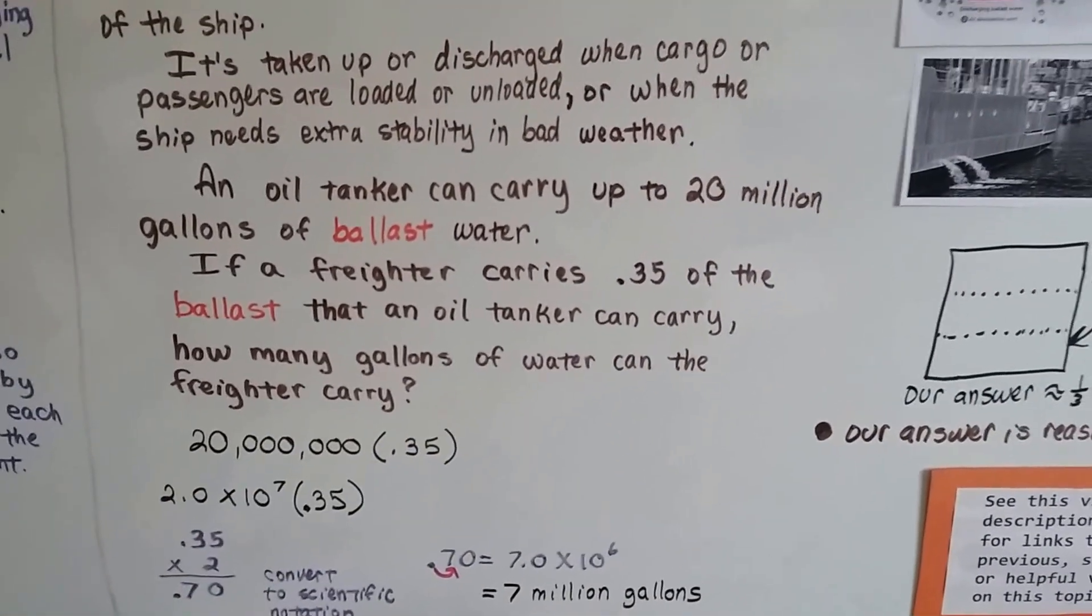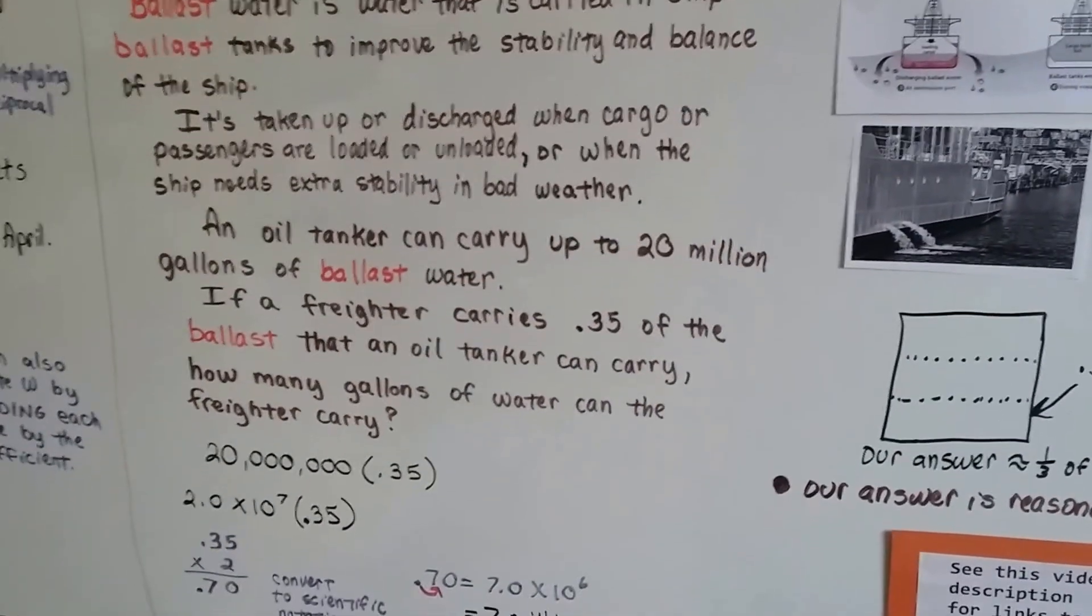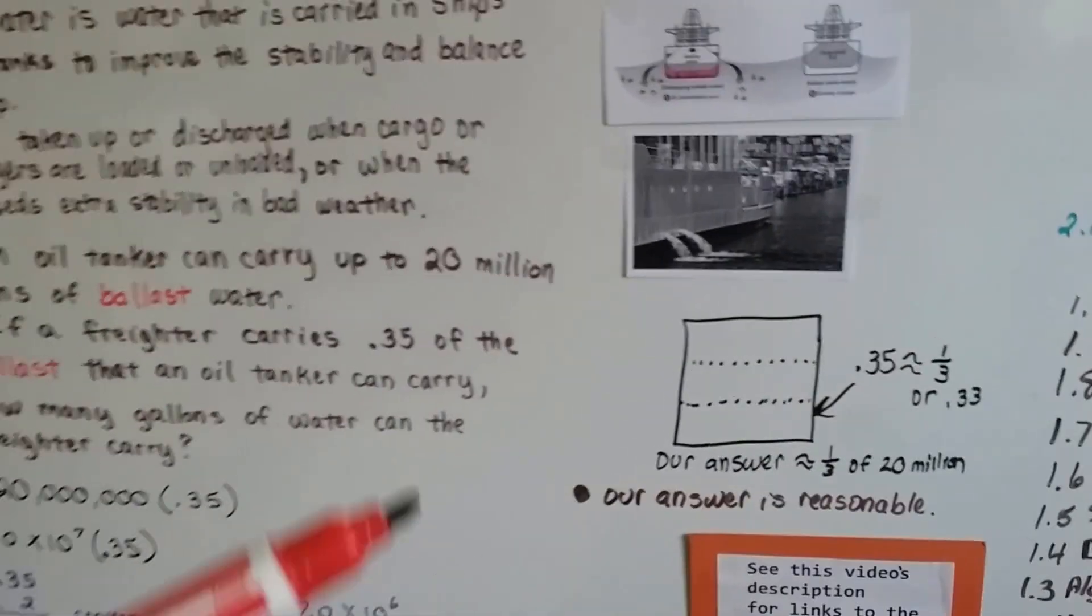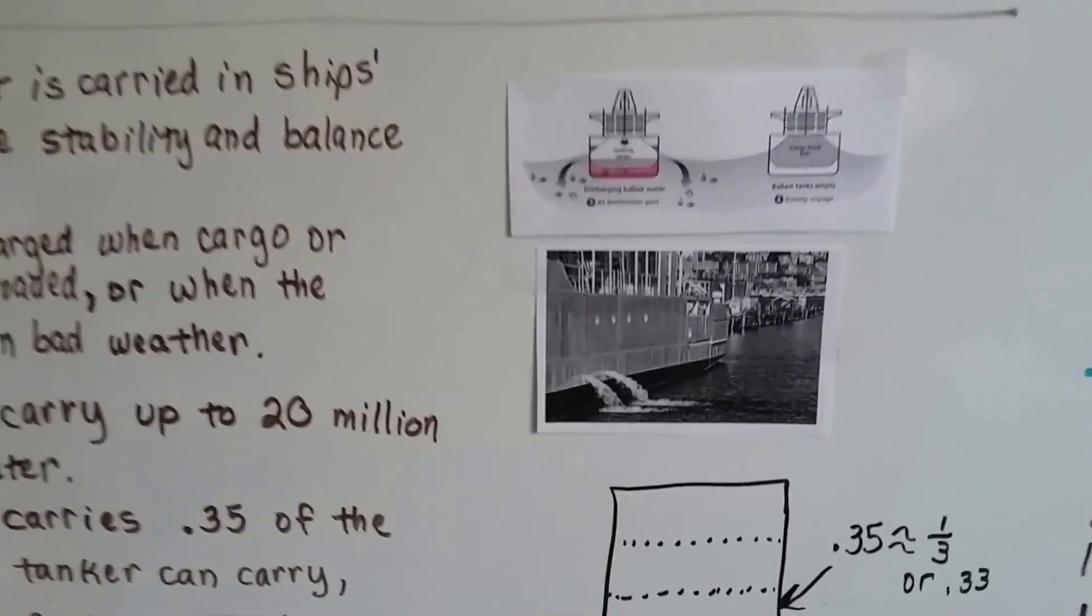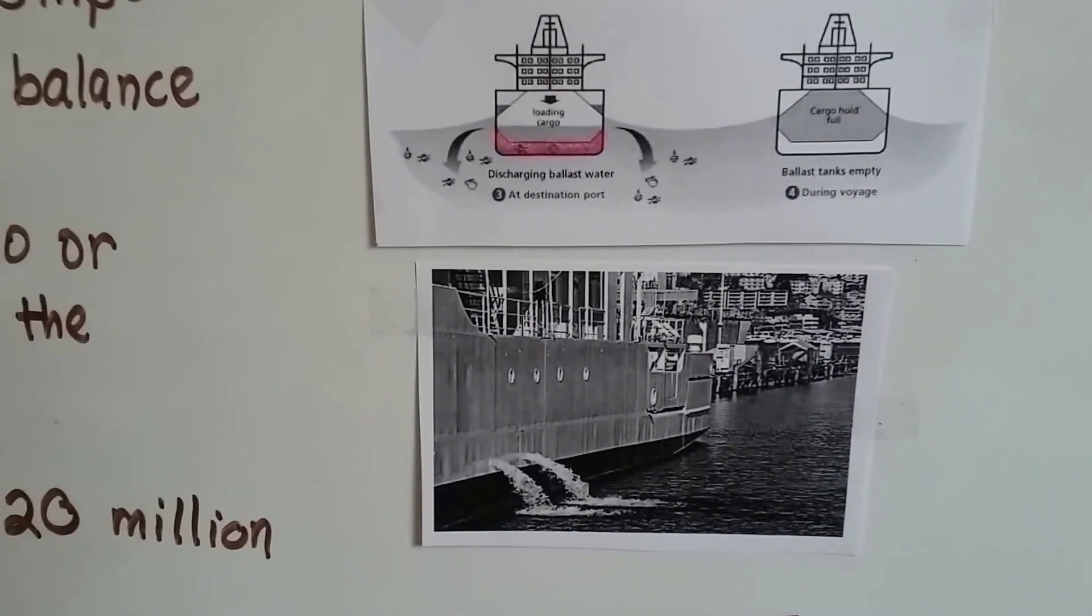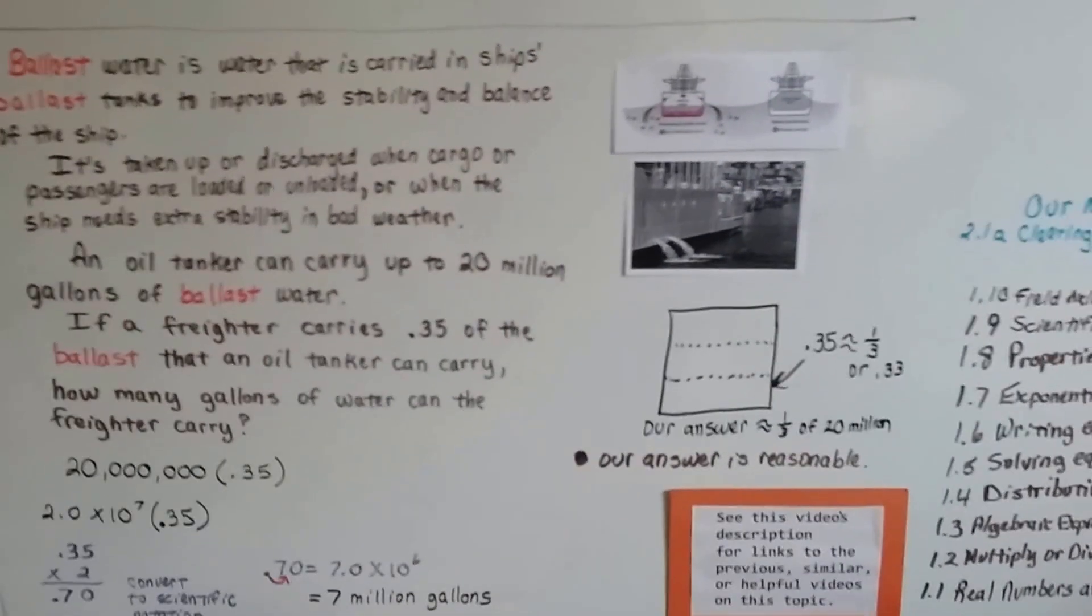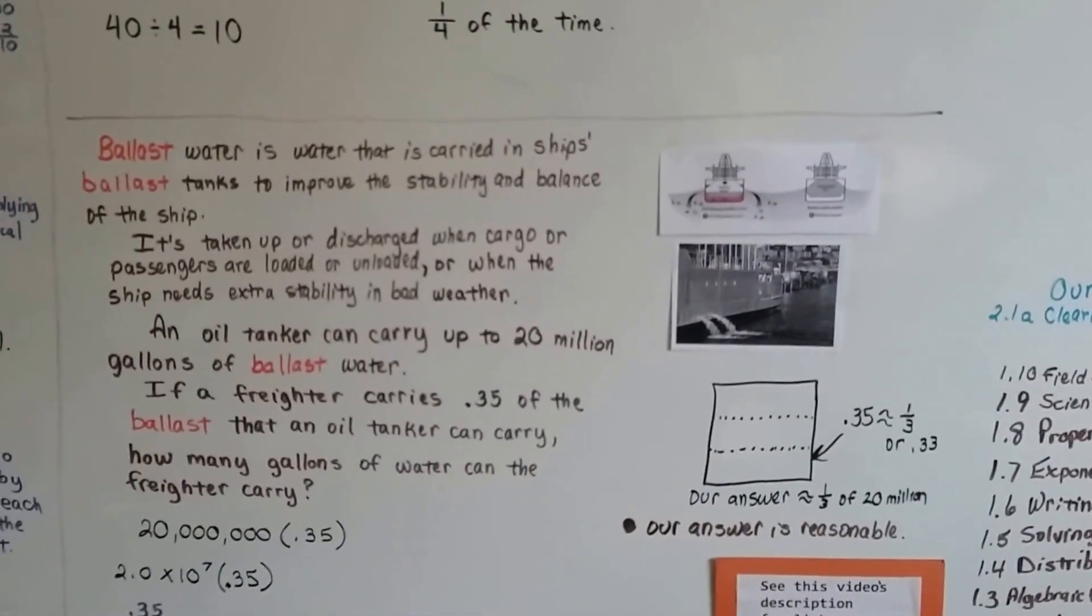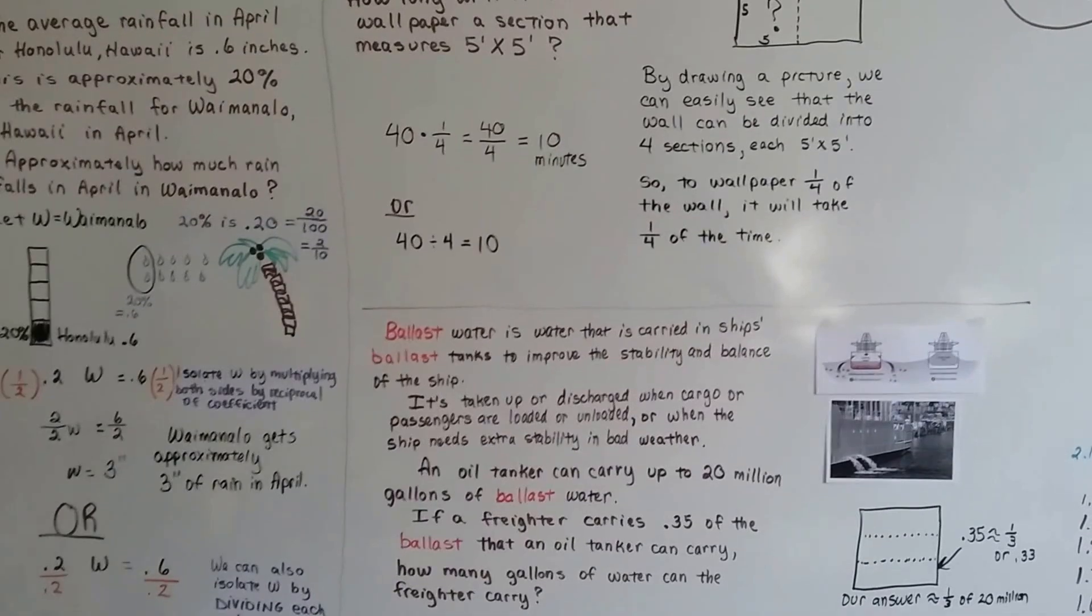So, we know the freighter can carry 7 million gallons. So, is 7 approximately a third of 20? Yeah, because 7 times 3 is 21. So, it's about a third. And that's what we needed was about a third. So, by drawing a picture or going on the internet to look at a picture so that we even know what ballast is, can help us. And it won't help us write the equation, but it'll help us make sure that our answer is reasonable. So, drawing a picture won't always help us write the equation. Sometimes, it'll just help us visualize the problem. Or, sometimes, it might actually help us write the equation.